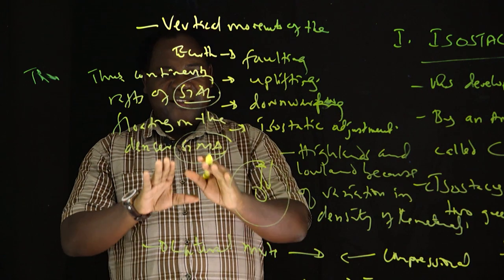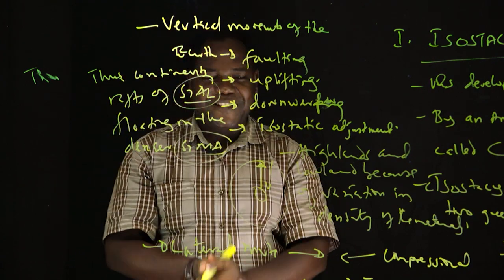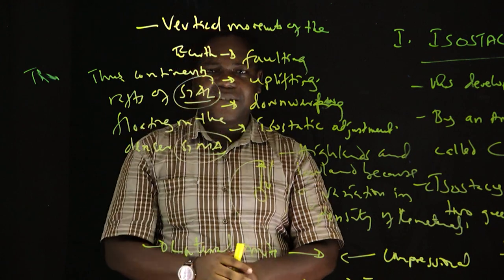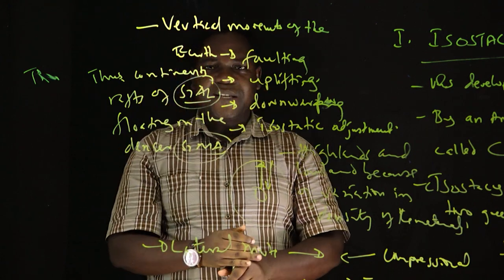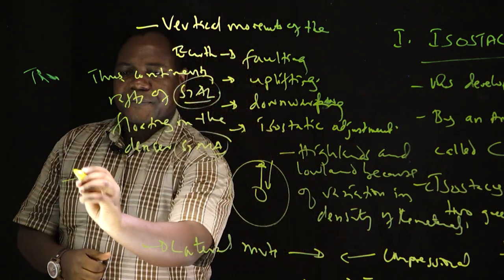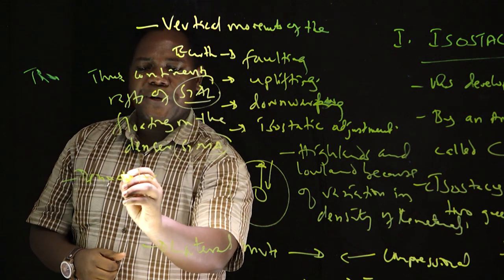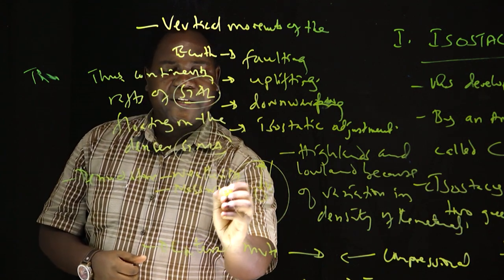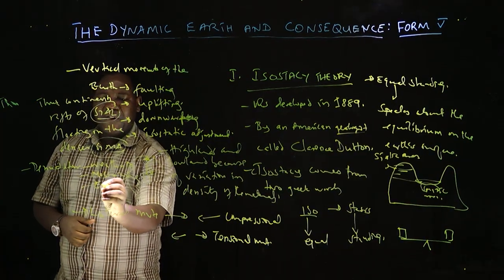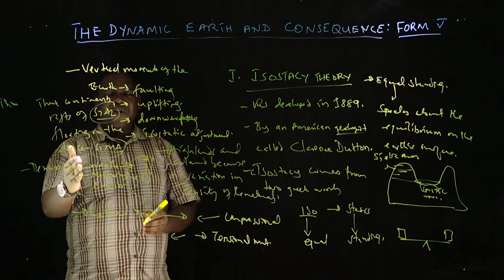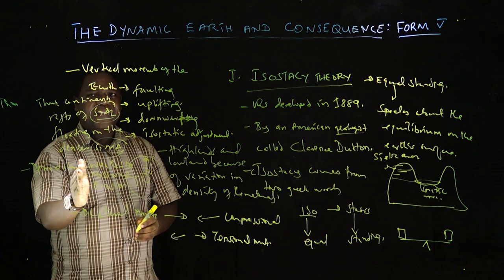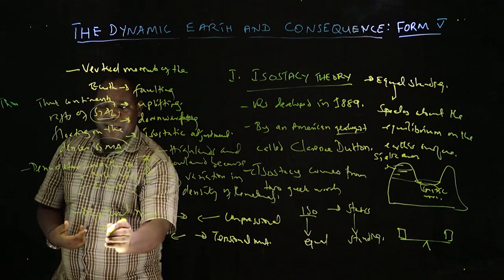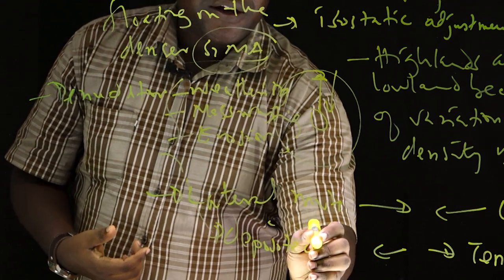The highlands, wherever you are, will always undergo denudation processes, which include weathering — the breaking down of materials — mass wasting, the movement of weathered materials, and erosion. These take place on the highlands, and the impact mainly is to reduce the weight. Where do all these materials go after undergoing these three processes? They get to be deposited on the lowlands.